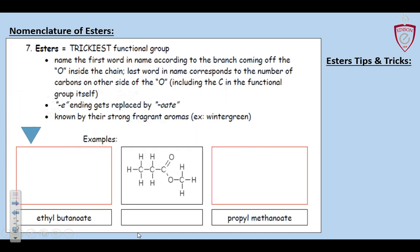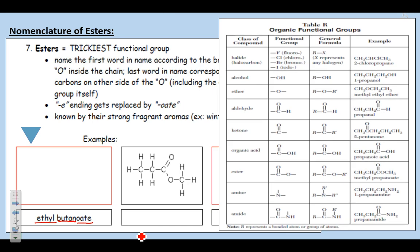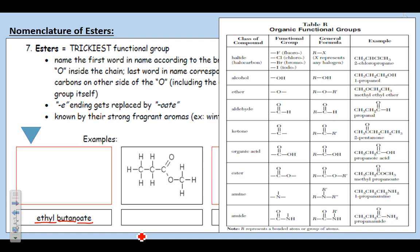Next one — esters. They say they're the trickiest functional group, but we just got to practice. We've got '-oate.' That tells you which functional group to look for. I see 'bute' and I see 'ethyl.' So I know there's going to be an ethyl — two carbons somewhere — and a 'bute' — four carbons somewhere else. The '-oate' tells me how to connect everything up. Looking for '-oate' on our reference table: I see I start off with a C double bonded O with an O in the chain.